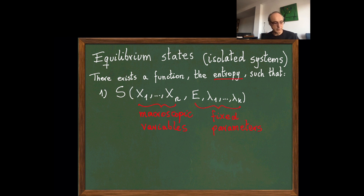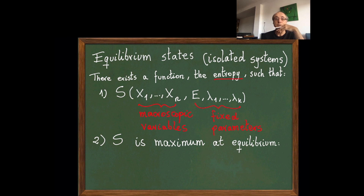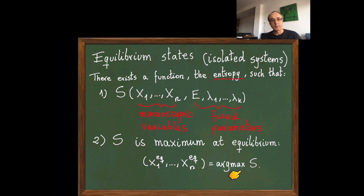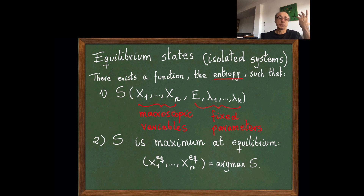Why does the entropy solve the problem of characterizing equilibrium? Because we also postulate that this function is maximum at equilibrium. So the possibility is that there exists a function of my macrostate and this function is maximum at equilibrium, which means I can solve the main problem: find the value at equilibrium of these macroscopic variables. I can solve it by maximizing the entropy—the arguments that maximize the function S are the equilibrium values of my variables. This is the solution of the first task of thermodynamics.